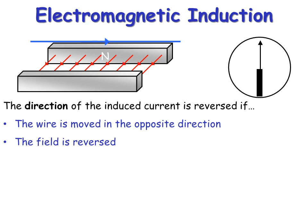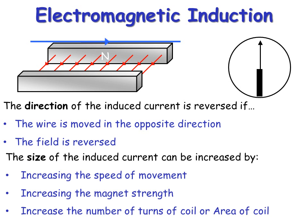The direction of the current can be reversed if you change the direction the wire is moving, and also if you change the direction of the magnetic field.